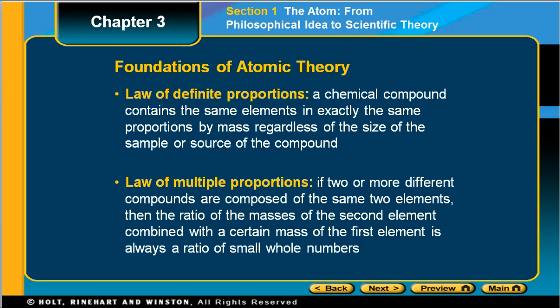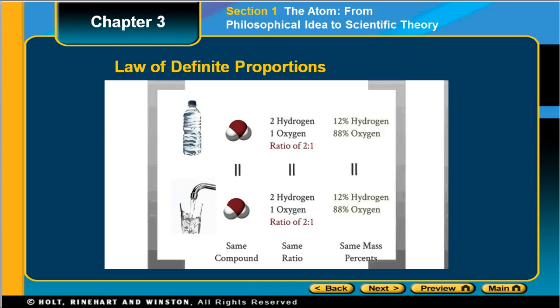The law of multiple proportions says that if two or more different compounds are composed of the same two elements, then the ratio of the masses of the second element combined with a certain mass of the first element is always a ratio of small whole numbers.